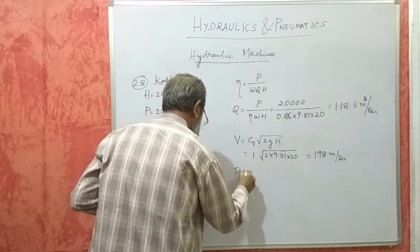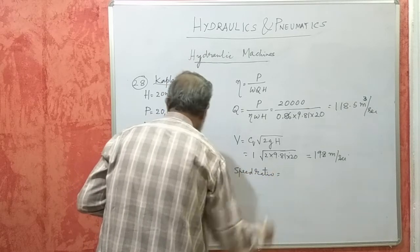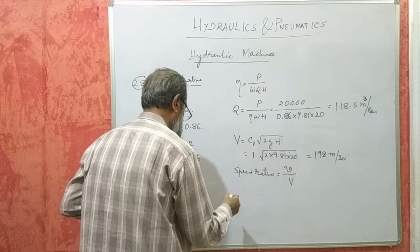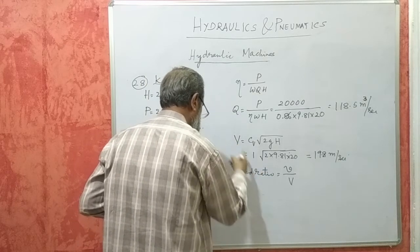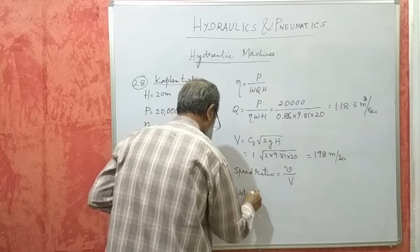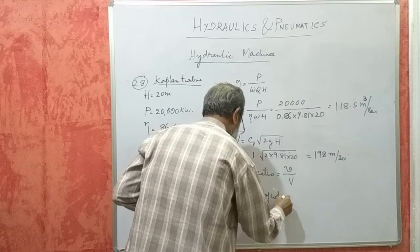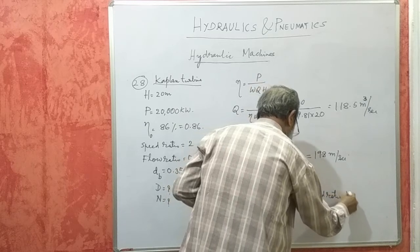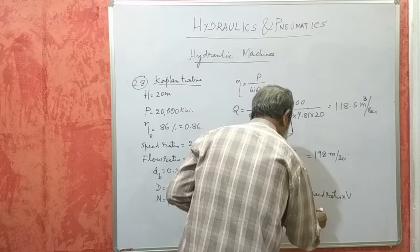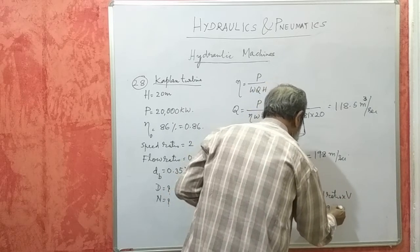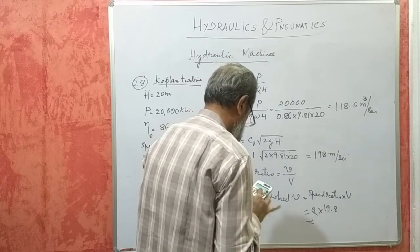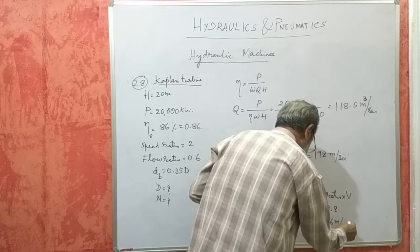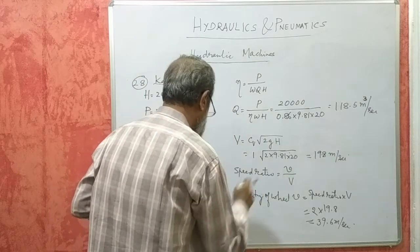Now, speed ratio. Speed ratio means small v by capital V. This is inlet velocity of water, this is the velocity of wheel. Small v is equal to speed ratio into capital V, that is 2 into 19.8, that gives me 39.6 meters per second.